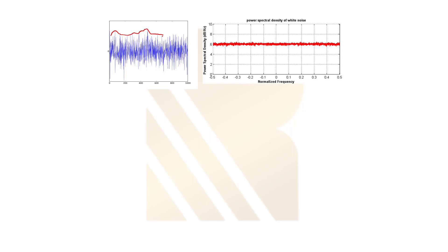Looking at white noise: the amplitude is changing and is random — it increases and decreases without following a specific pattern, and it doesn't have a single frequency but has many frequency components inside it. It's a voltage changing all the time with a relatively low amplitude. As you can see, the power of this white noise is roughly constant — around six — and does not change with frequency. This is shown on a normalized frequency axis.